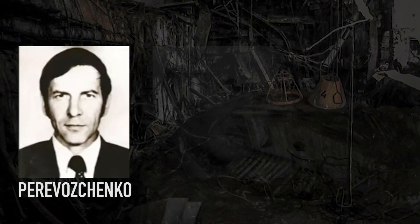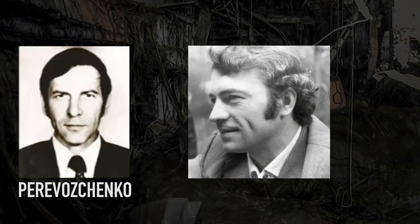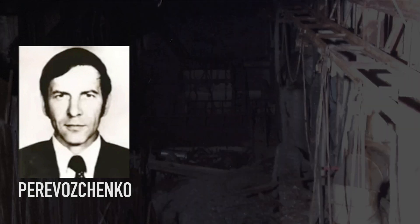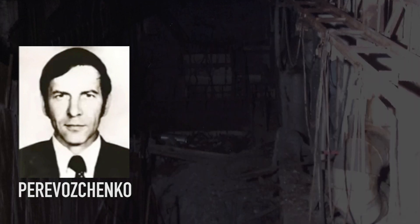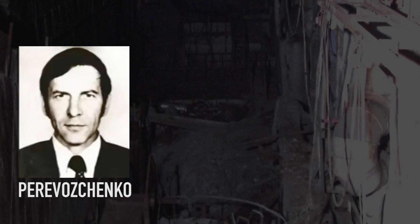Perevozchenko leaves the control room and checks the radiation levels with a dosimeter, before going to search for Khodemchuk. During his search, he navigates through radioactive rubble, which emits over 10,000 roentgens per hour. It is here that he receives a lethal dose of radiation.